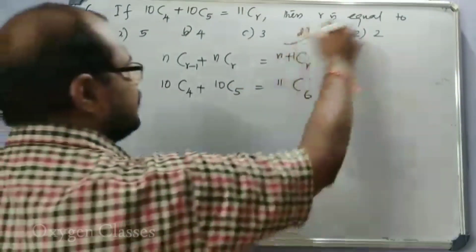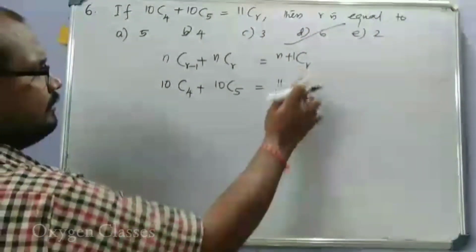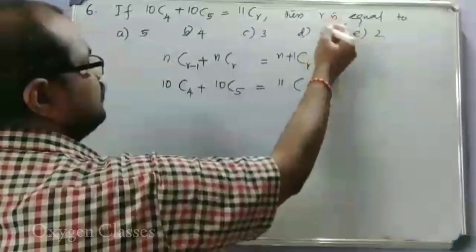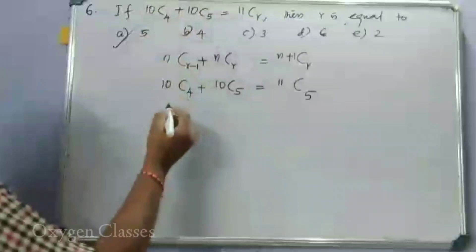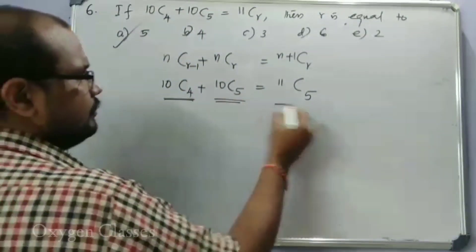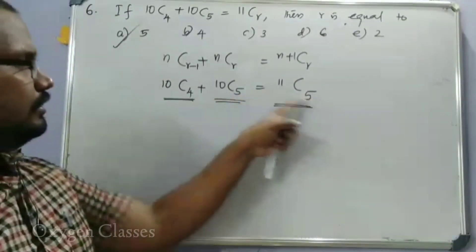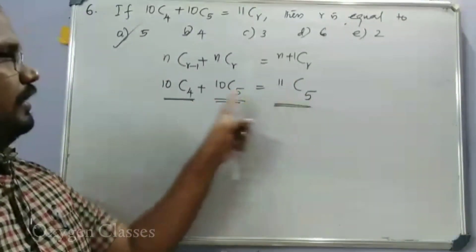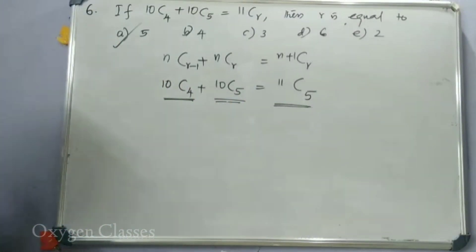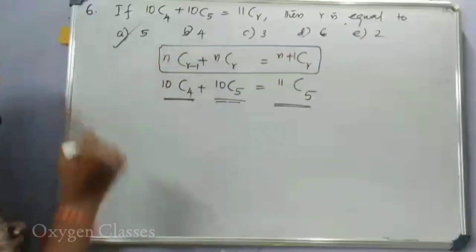Wait — simplifying the identity: NCR minus 1 plus NCR equals N+1CR. Applying this, 10C4 plus 10C5 equals 11C5. Therefore R equals 5, and the answer is option A. This is a simple one-step question using Pascal's identity.